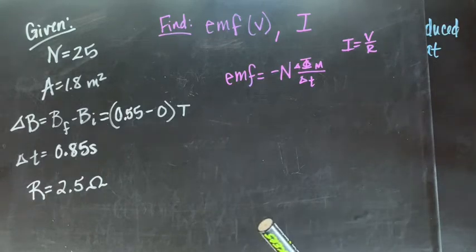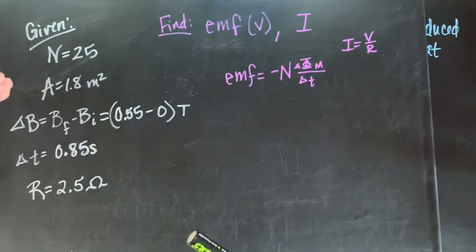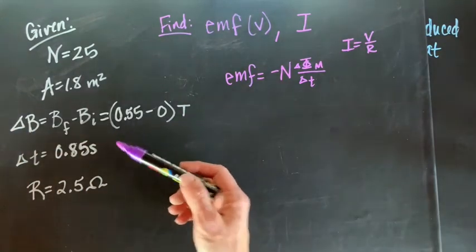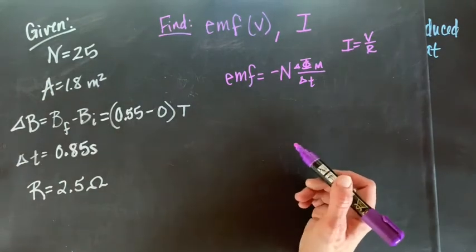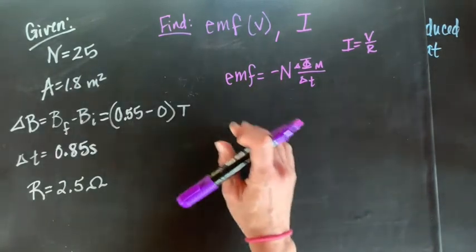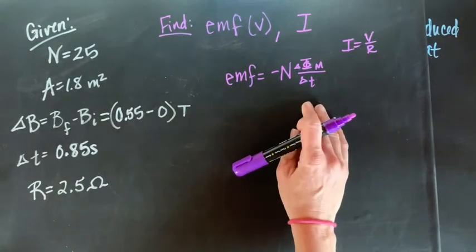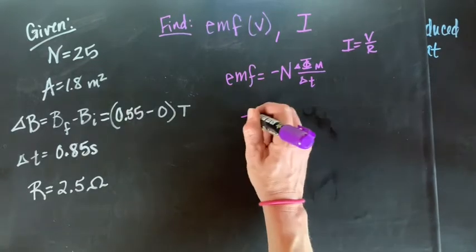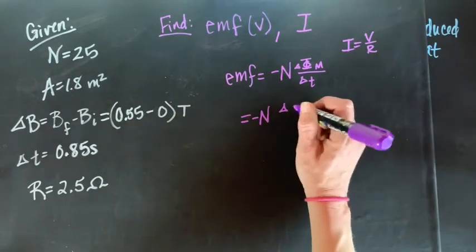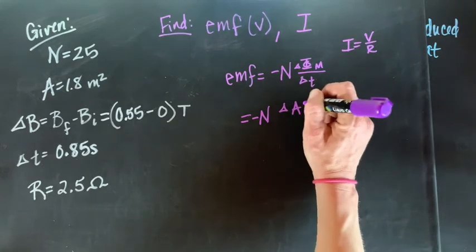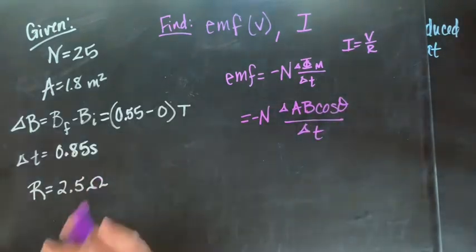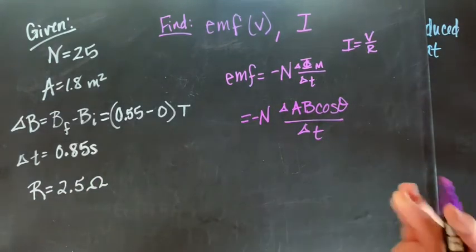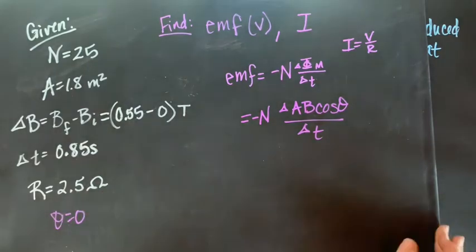Here's our given information. We have N and A. We have a changing magnetic field, so we know that delta B is 0.55 and delta T is 0.85. We use this information. Here's our EMF formula, but then we're going to rearrange. So we have delta A B cosine theta over delta T. All of it is perpendicular to the loop, so theta is 0.